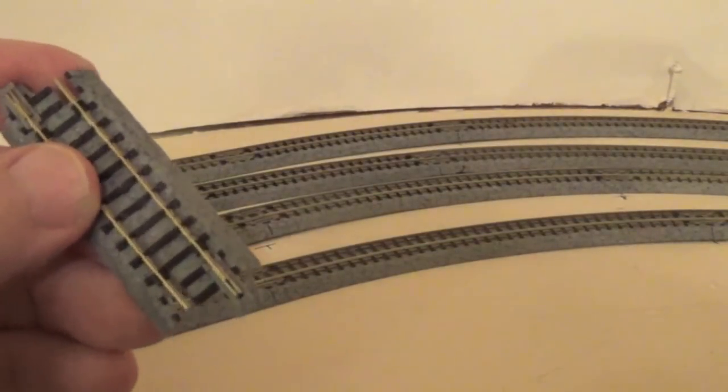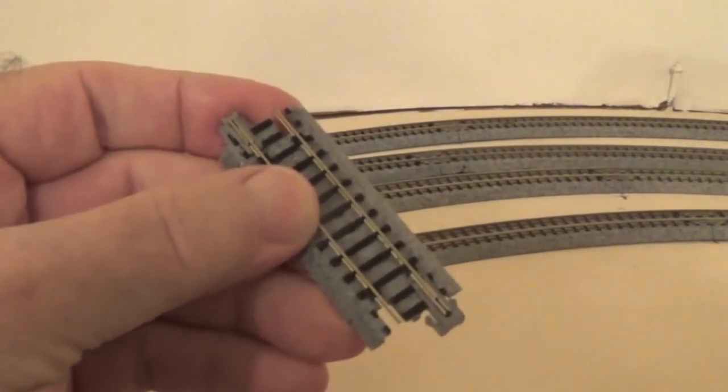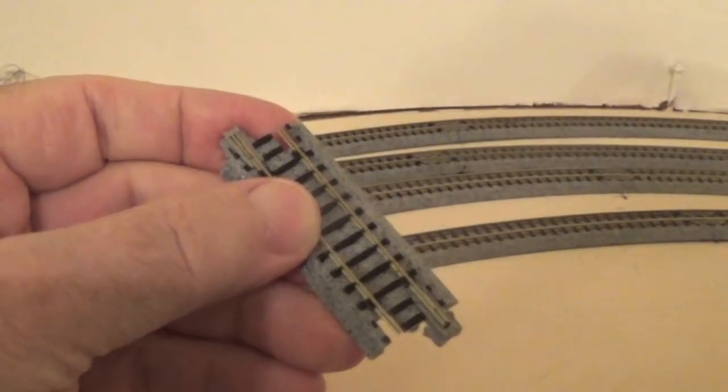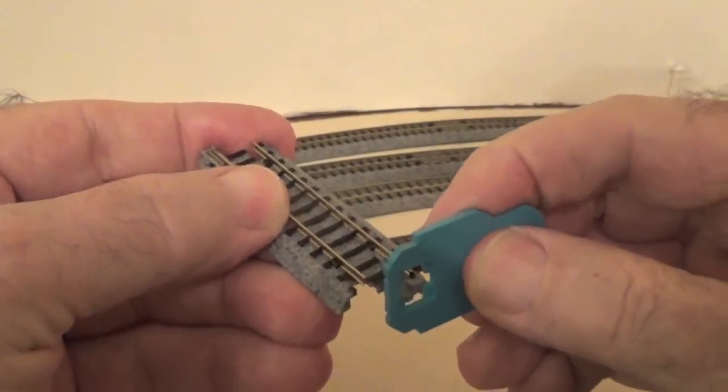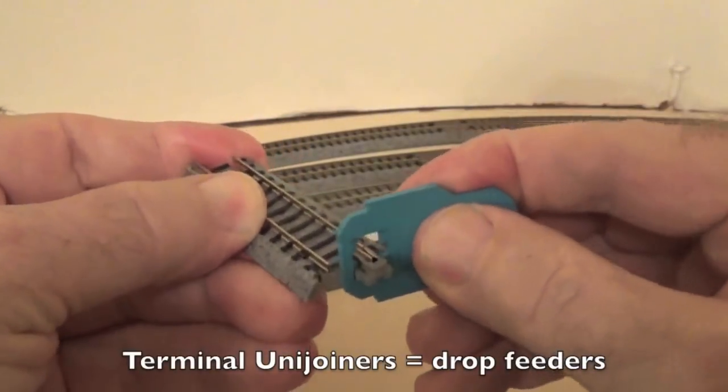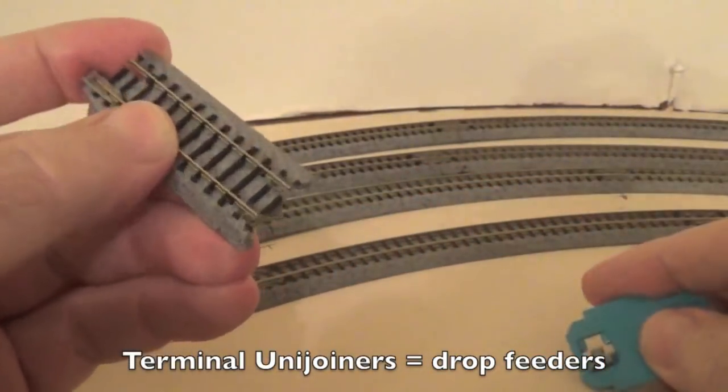As I mentioned I had to remove the unit joiners from the expansion tracks. This is easy to do using a simple plastic tool that comes in every pack of Kato drop feeders which Kato calls terminal unit joiners.